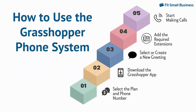Register and begin using your Grasshopper phone system in five easy steps. You start by selecting your plan and number. Next, you download the app and create your greetings and extensions. You can immediately start making and receiving calls and texts when these steps are completed.